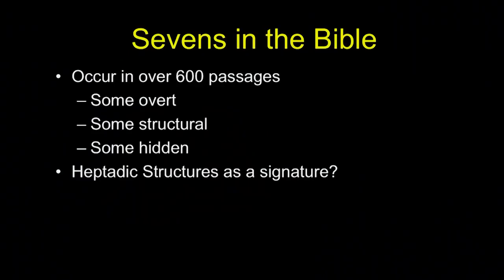How many of you have noticed there are sevens in the Bible? Anybody without their hand up hasn't read their Bible. Over 600 passages have it very explicitly. Some are very overt — seven of this and seven of that. Some are structural; you'll notice there's always seven of them. Some are actually hidden, and yet you can find them if you know how to look. I'm going to suggest to you the possibility that these heptatic structures are a signature of the Creator Himself.